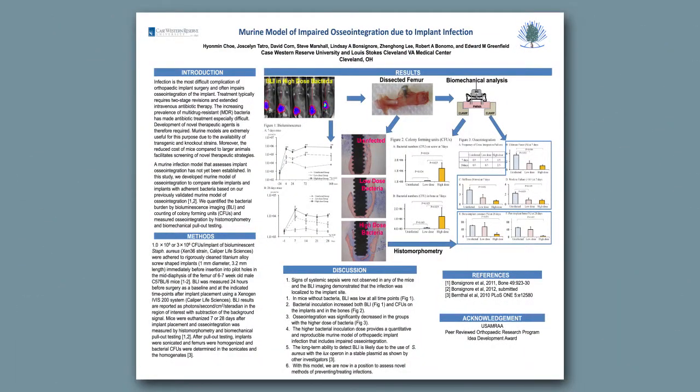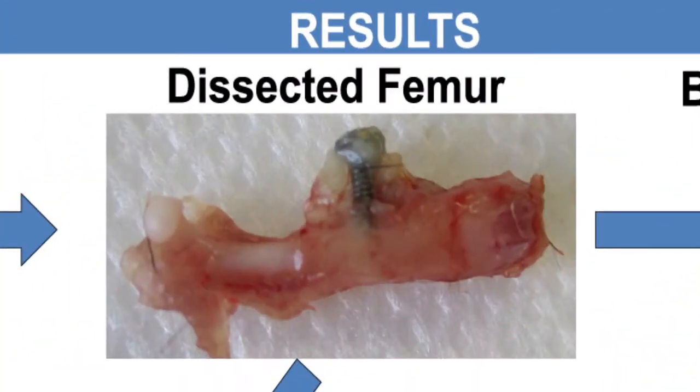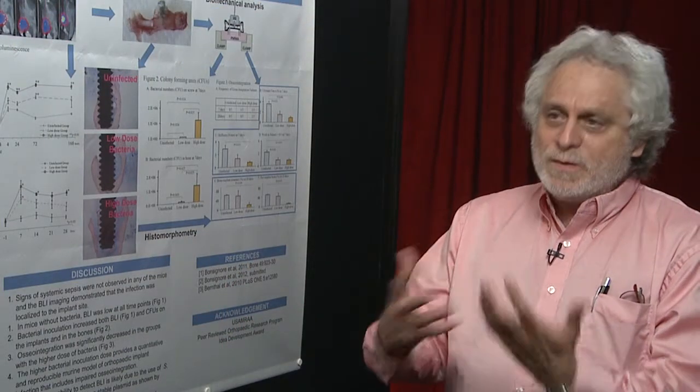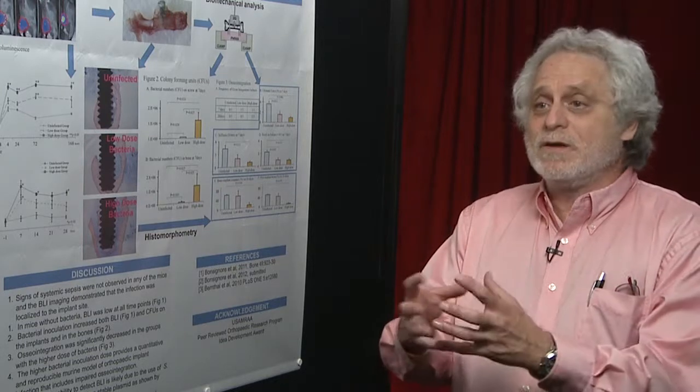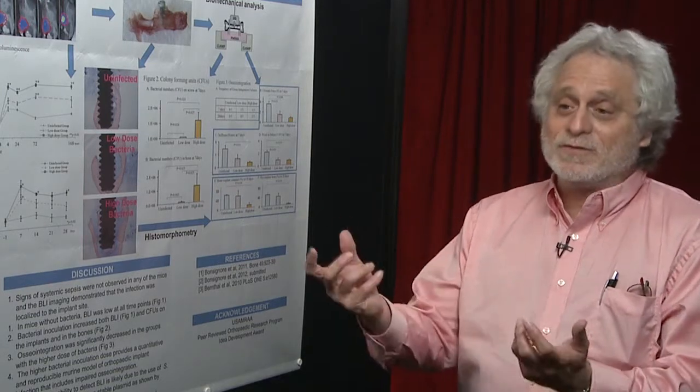The methodology is we had a mouse model of osteointegration where we put very tiny metal implants in the femurs of mice, the long bones, and the bone grows into them. Now we've added bacteria to mimic an infection and what happens is the bone doesn't integrate because the bacteria cause massive inflammation and basically the implants often fall out.